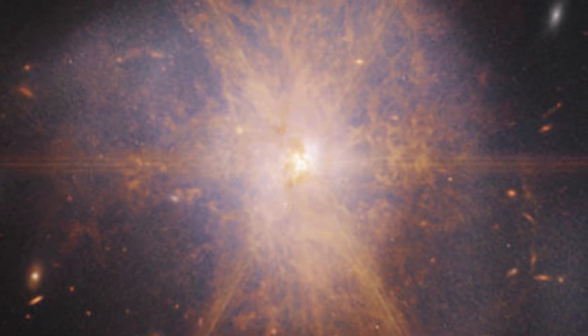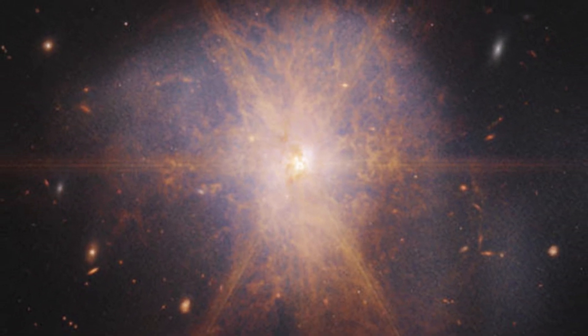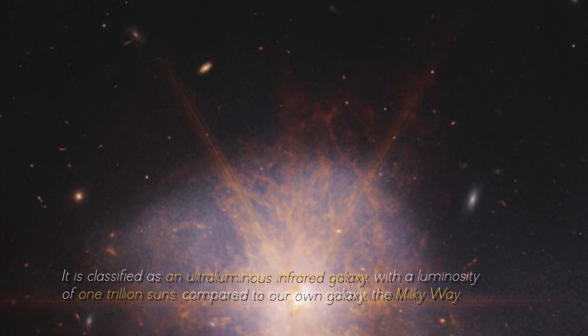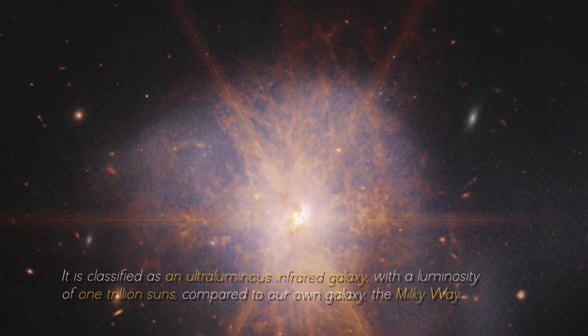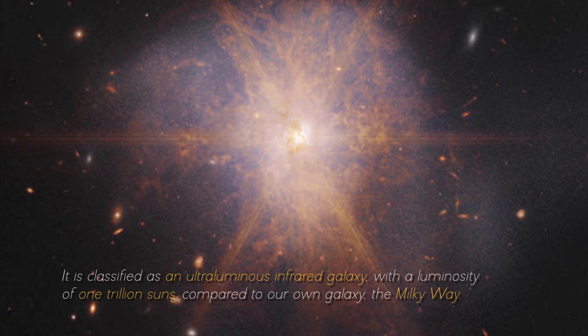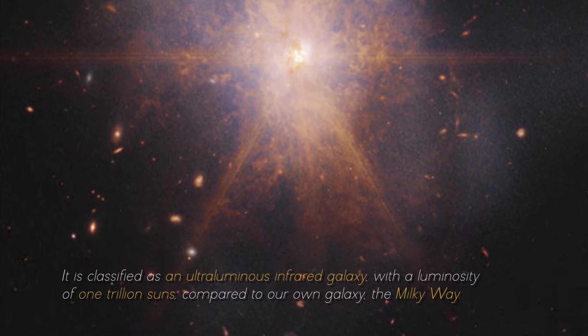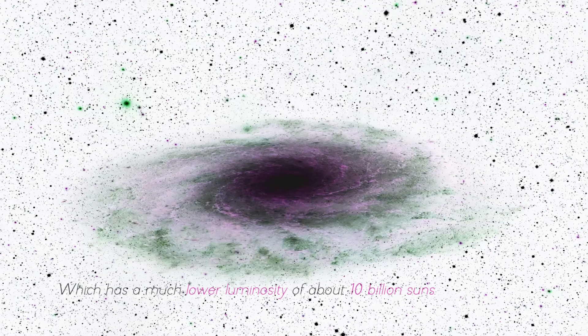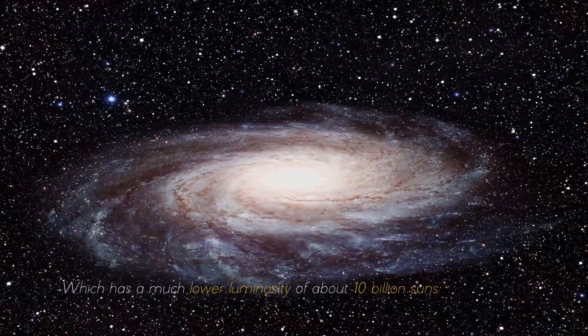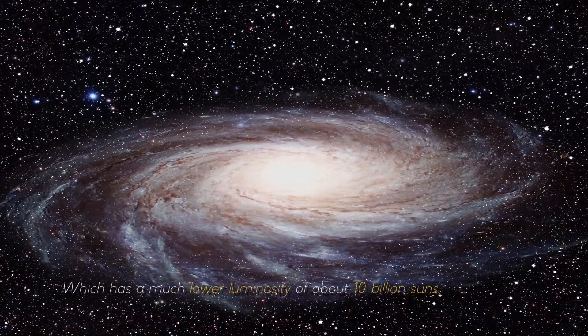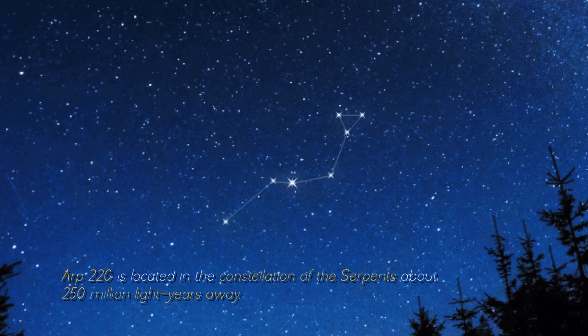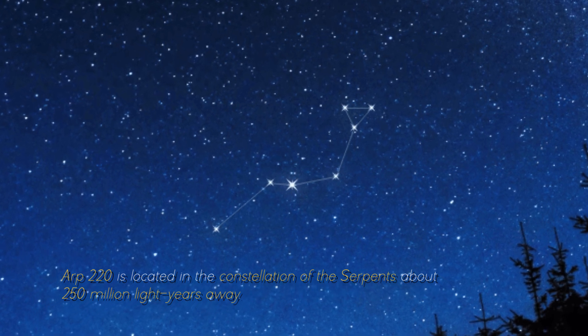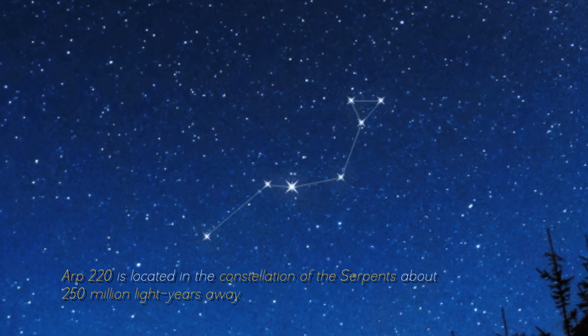Making it perfect for observation by the James Webb Space Telescope. It is classified as an ultra-luminous infrared galaxy, with a luminosity of 1 trillion suns compared to our own galaxy, the Milky Way, which has a much lower luminosity of about 10 billion suns. ARP 220 is located in the constellation of the Serpents, about 250 million light-years away.